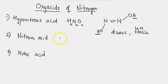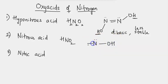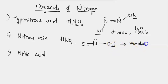The second one is nitrous acid with the formula HNO2. Nitrogen is the central atom with a lone pair of electrons; on one side it is connected to OH, and on the other side it is connected to a double-bonded oxygen. This is a monobasic acid because only one hydrogen is directly connected to oxygen, meaning it can donate only one H+ ion. It is also a weak acid.